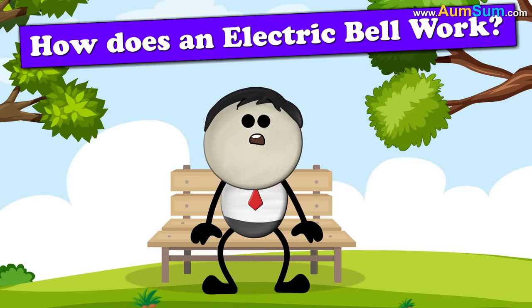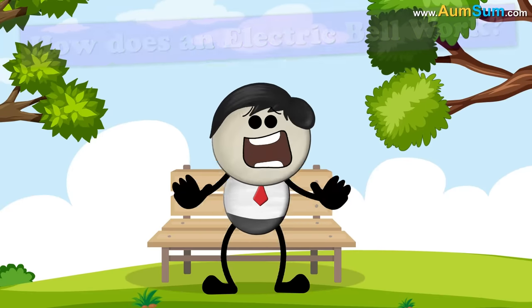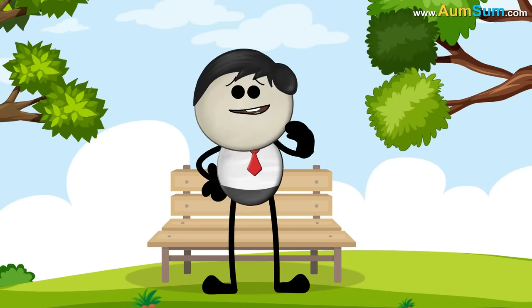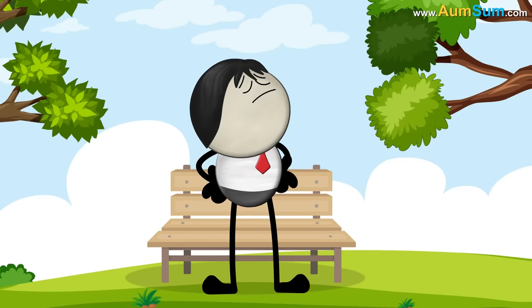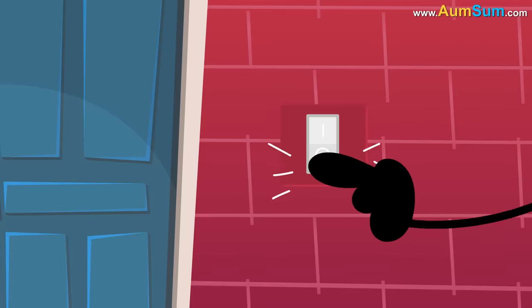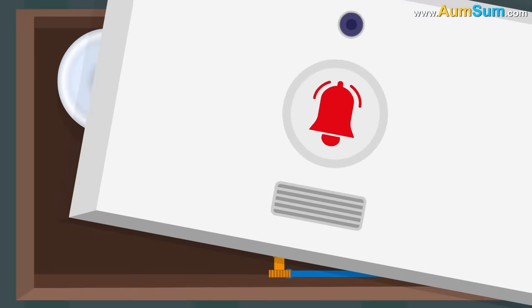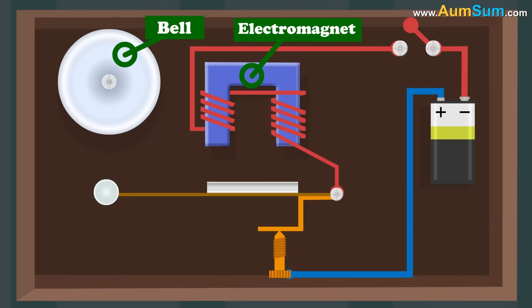How does an electric bell work? No idea. I did not invent it. Oh AumSum. An electric bell consists of a bell, an electromagnet, switch, battery, clapper and a coil.